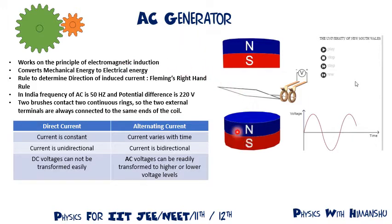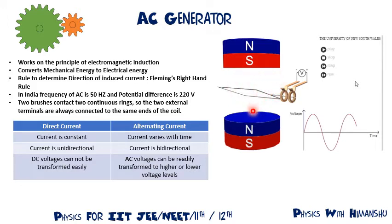There will be induced current in the coil. As you can see in this figure, we have a north pole and a south pole. This is a coil. When this coil rotates in the magnetic field, the flux will increase then decrease, increase then decrease. Because of this change in magnetic flux, there will be an induced EMF and induced current in the circuit. The voltage produced will be a sinusoidal waveform like this.